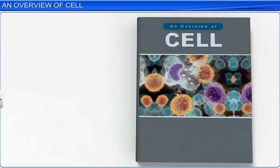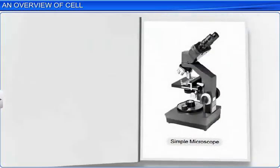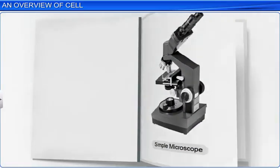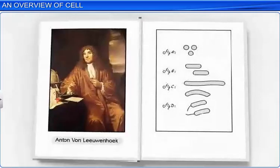Scientists didn't know about the existence of cells until the invention of the microscope. Anton van Leeuwenhoek, an amateur Dutch scientist, is credited as the first person to see and describe living cells.